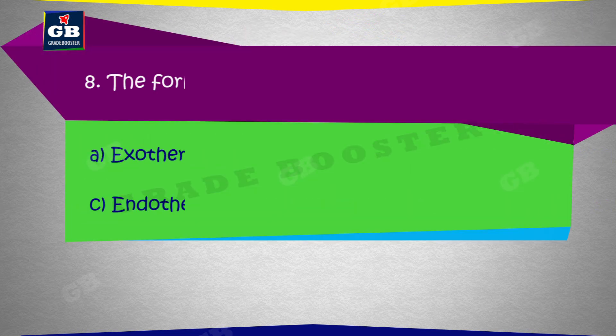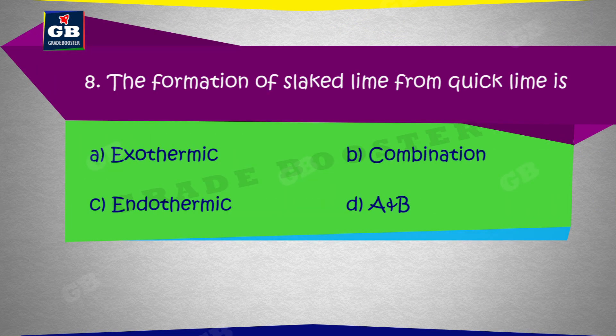The formation of slaked lime from quick lime is: A. Exothermic, B. Combination, C. Endothermic, D. A and B.